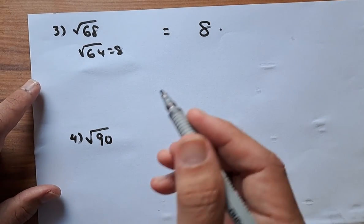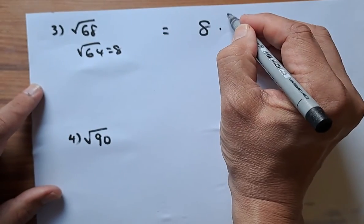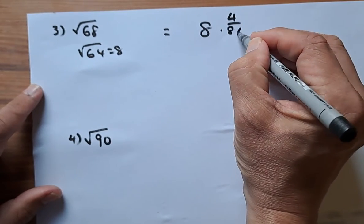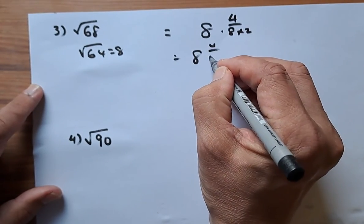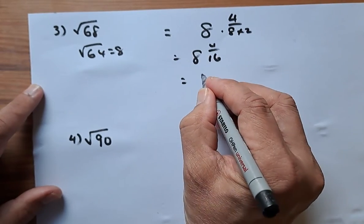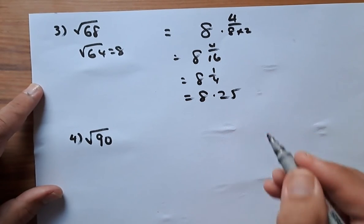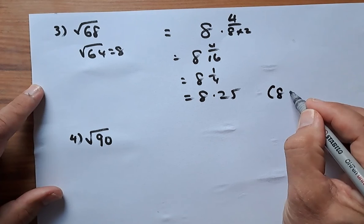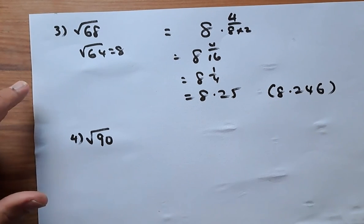So what you need to do is find the difference: 68 minus 64 is going to be 4, divided by double of this number—8 times 2 is 16. 4 out of 16 is 8 and a quarter, and the answer is 8.25. And again, from the calculator I've checked, the answer is 8.246, which is very close to 8.25.